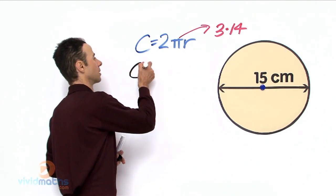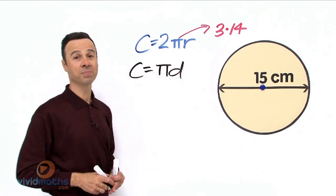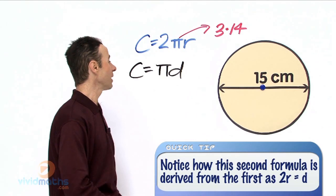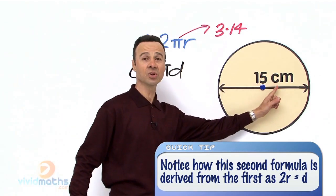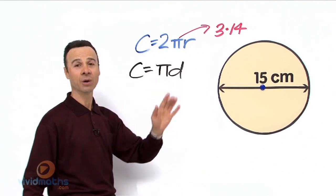That is much better because we are given the diameter in this particular example, and the diameter happens to be 15 cm. All we need to do is plug it into this formula, and we can work out the total distance around. So let us do that now.